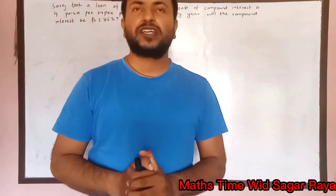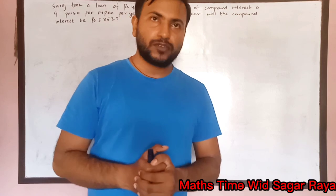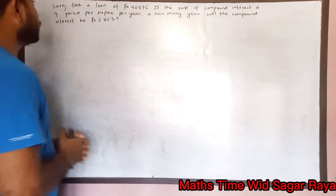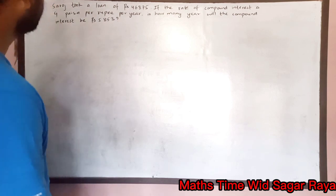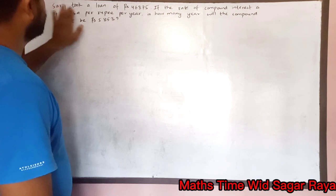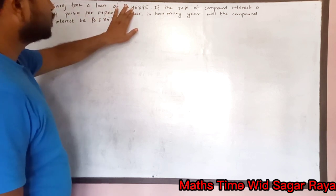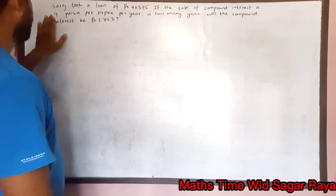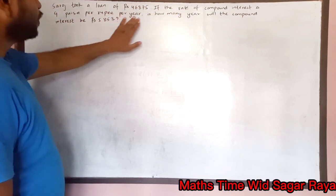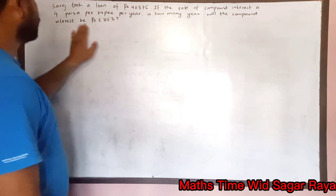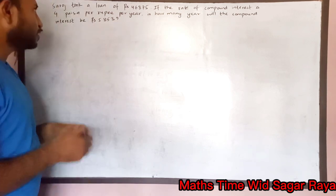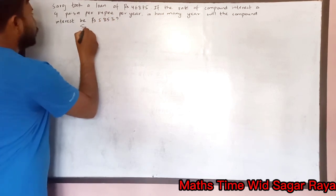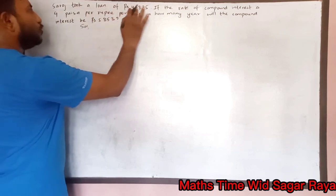Hello everyone, welcome to my channel Master. I'm Salah Raya. Today I'm back with another question from Class 10 — compound interest. Without any delay, let's go through the question. Soros took a loan of rupees 46,875. If the rate of compound interest is four paisa per rupee per year, in how many years will the compound interest be rupees 5,853?